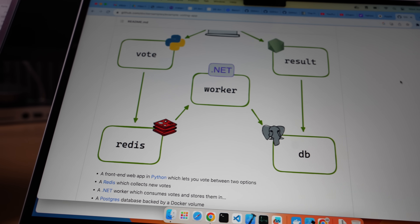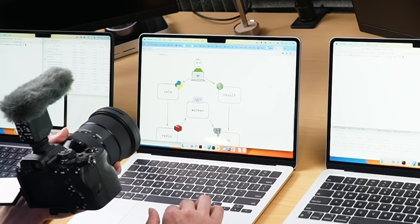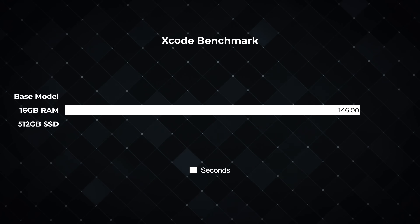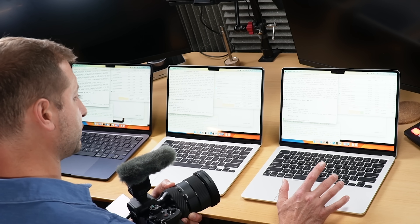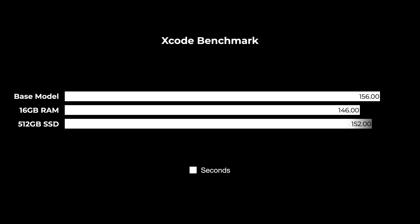You can still see the relative difference between the machine with higher RAM and machines with lower RAM. I threw a wrench in and started up a Docker example voting app — a bunch of Docker containers working together: a Python container, a Node container, a .NET worker, Redis cache, and a Postgres database — all running and talking to each other on top of what's already going on. I ran the Xcode build one more time: the 16 gigabyte machine won at 146 seconds. The 512 gigabyte model, using the most swap — 7 gigabytes of memory used and 9.3 gigabytes of swap — came in at 152 seconds. Perhaps the faster SSD is contributing to that slightly faster build time.